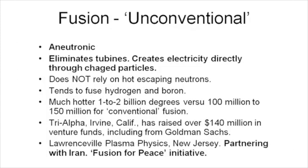Unconventional fusion - it goes by different names: a-neutronic. A-neutronic does not use neutrons. It just generates electricity directly. Charged particles come out and that's your electricity, so it eliminates turbines. We're possibly looking at a future of electricity generation from a nuclear reactor without a turbine.